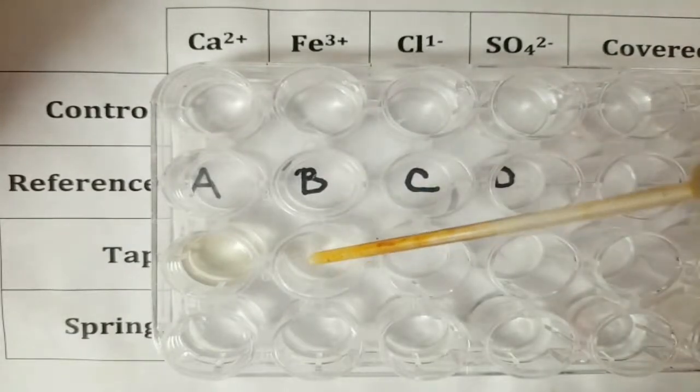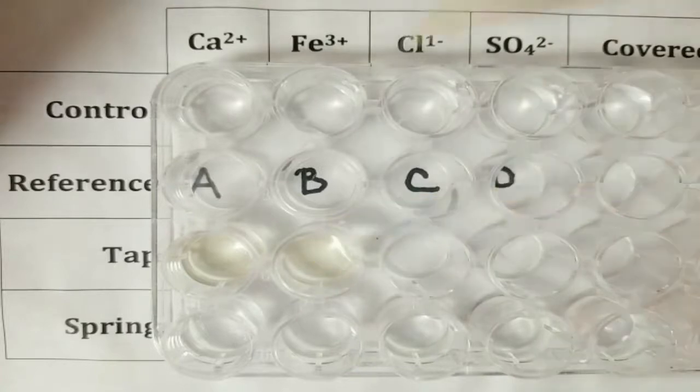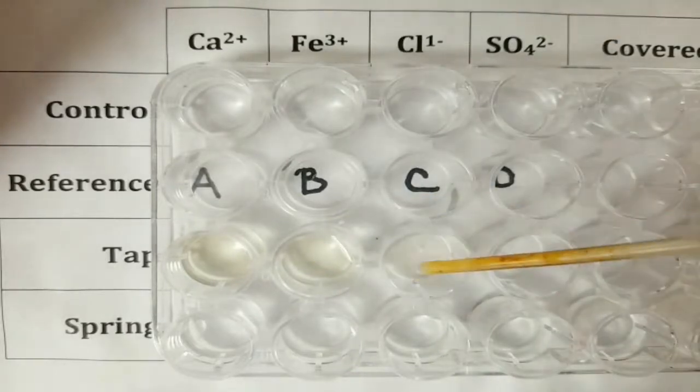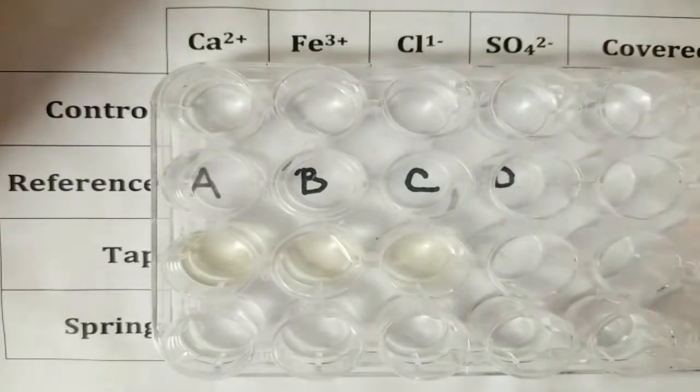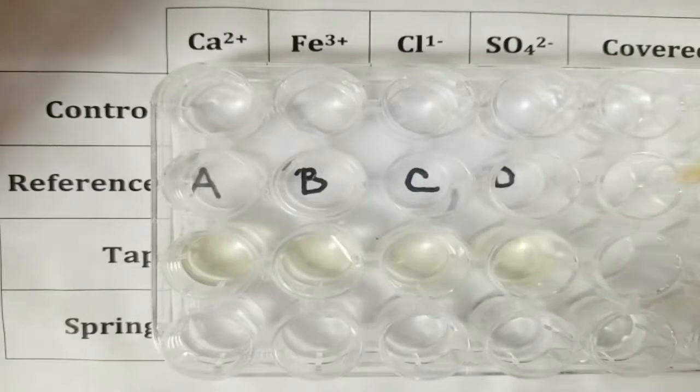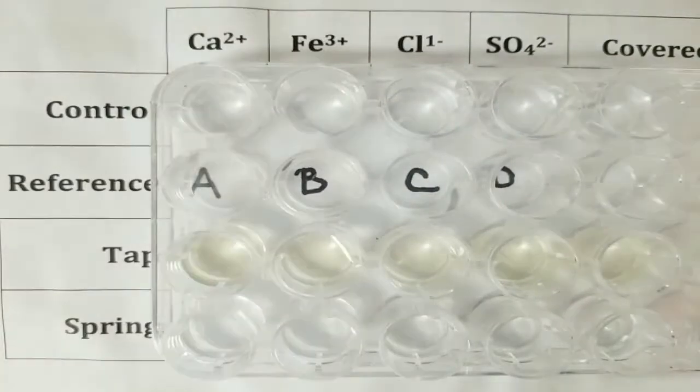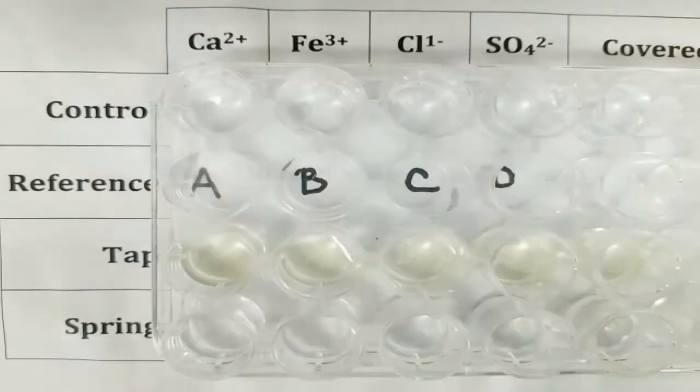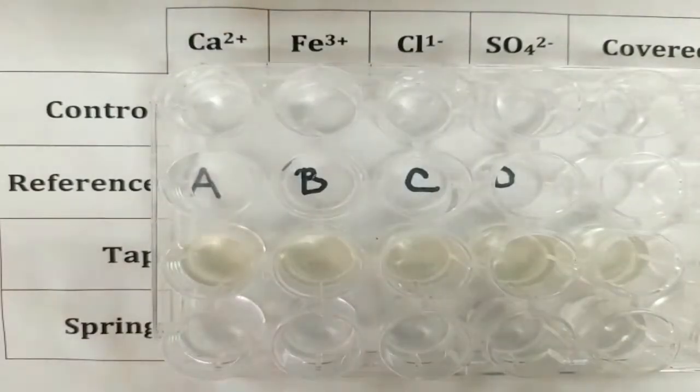I started with the control, and then I did spring, and I did tap. Now the references are substances that definitely have the ion. They are selected specifically because we know they have the ion we are looking for. As such, each reference is different.